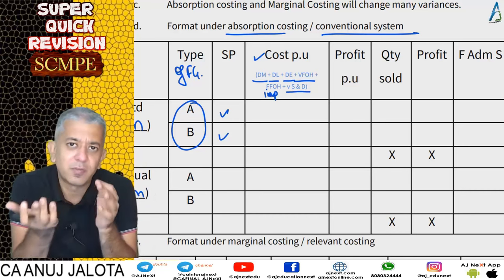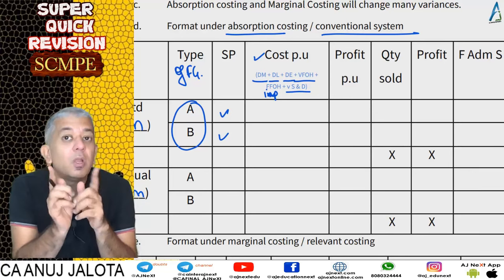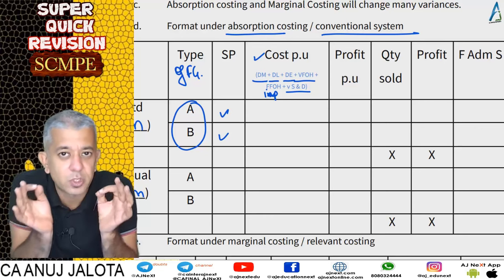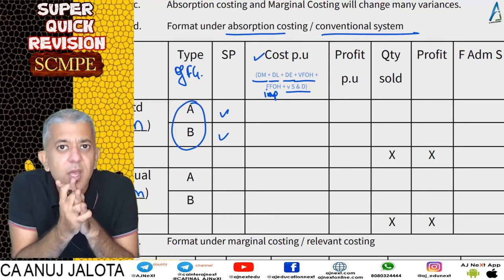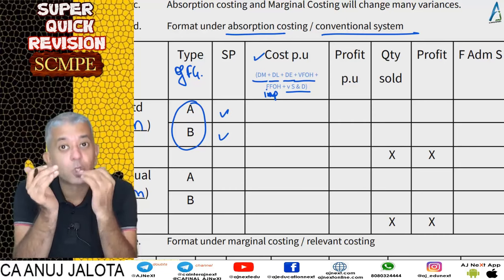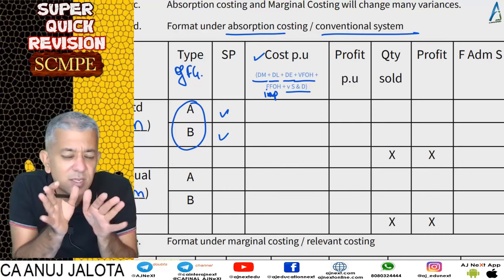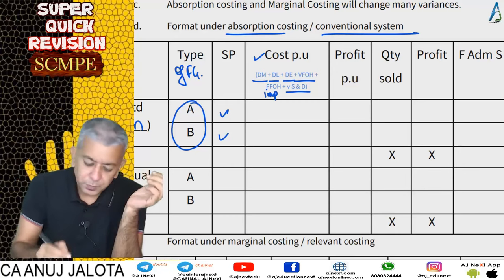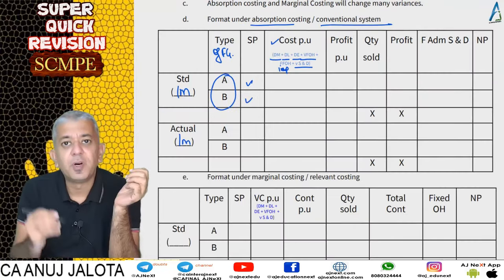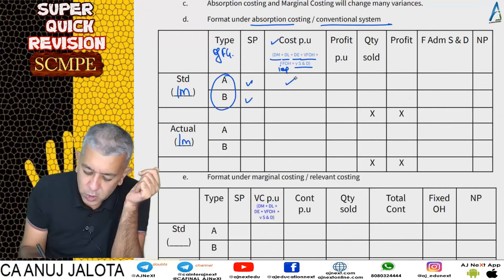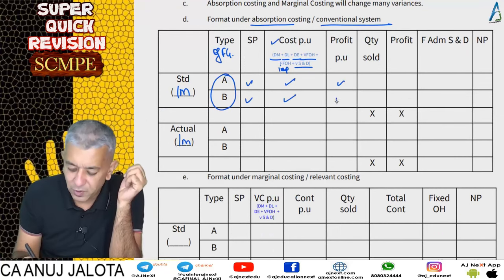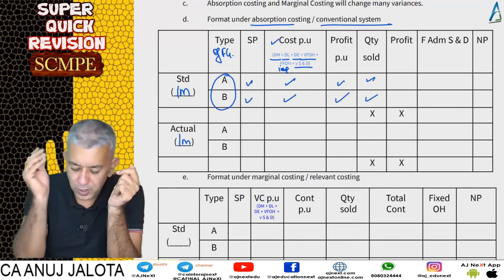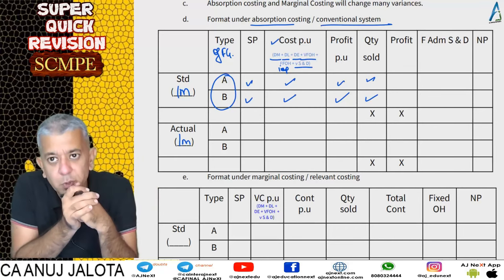Variable SND and fixed SND and fixed admin will not come into the per-unit cost under absorption costing because they are not dependent upon production. Absorption and marginal costing only apply to those fixed overheads which are dependent upon production. Admin and SND come below COGS in your cost sheet, hence absorption costing does not apply to them. From the cost per unit, you subtract from the selling price to arrive at profit per unit, multiplied by how many units you should have sold.